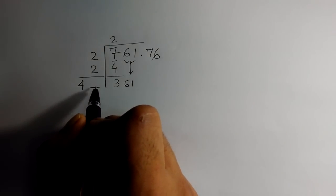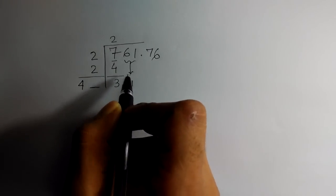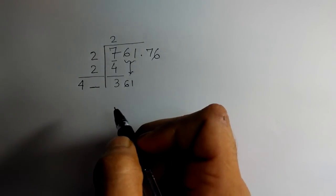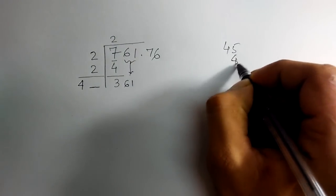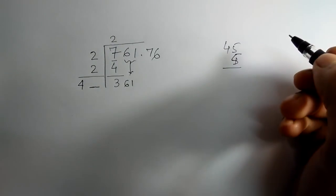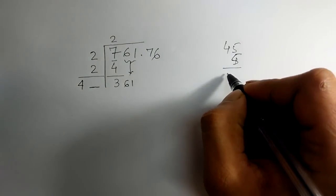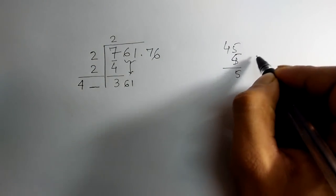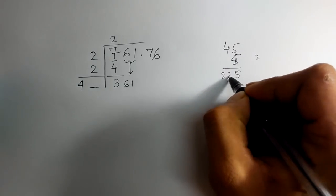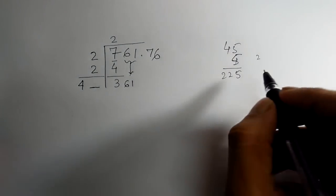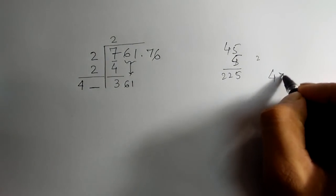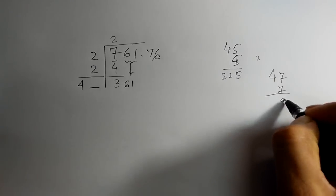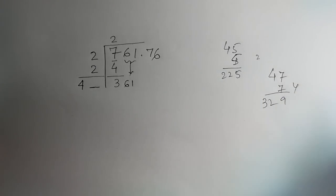So that multiplying this whole number with this number gives somehow 361. Say we take 45, 45 times 5 is equal to 2225, it is small. So let us take 47. 47 is close.